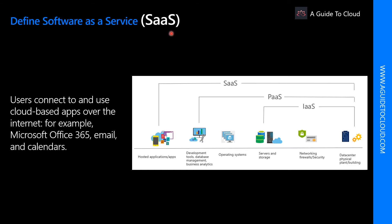Software as a Service is software that is centrally hosted and managed for the end customer. It allows users to connect to and use cloud-based apps over the internet. Common examples are emails, calendars, and office tools such as Microsoft Office 365. SaaS is typically licensed through a monthly or annual subscription, and Office 365 is the best example of SaaS software.